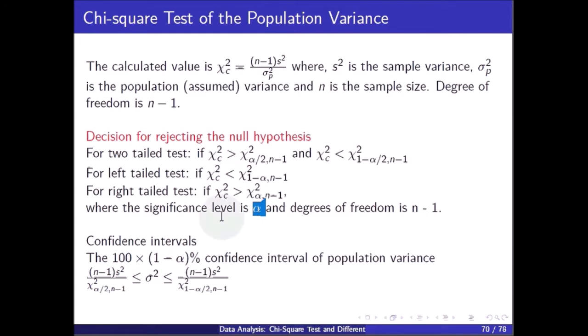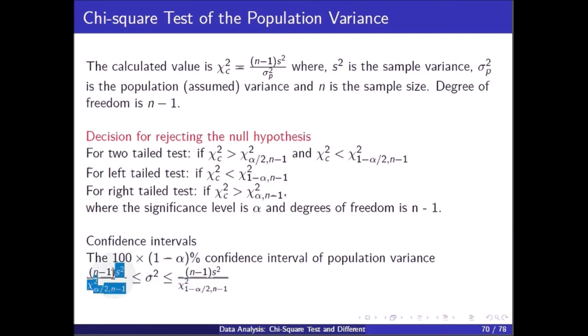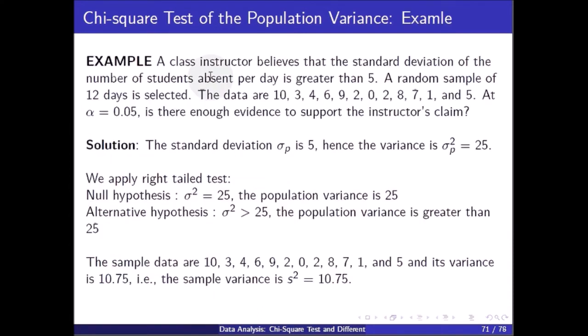Similarly, we can calculate the confidence interval. The 100(1 - alpha)% confidence interval of the population variance is such that the population variance should lie between the lower and upper bounds.